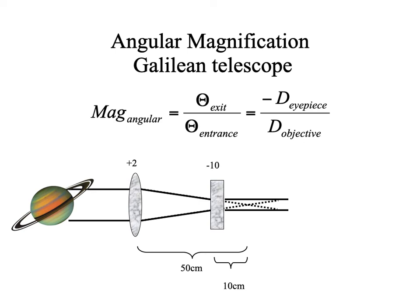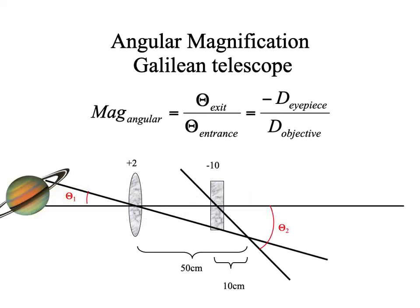All telescopes have zero vergence in and zero vergence out. With the Galilean scope: zero vergence encounters the plus-2 lens, rays converge half a meter to the right, but a tenth of a meter before convergence — while vergence is still plus 10 — we introduce a minus-10 eyepiece. The power calculation is the same: eyepiece over objective, with a minus sign. The tube length is 40 centimeters, not 60.